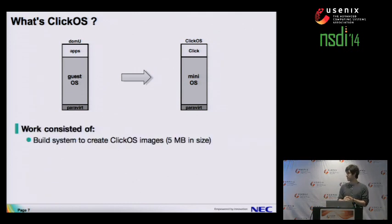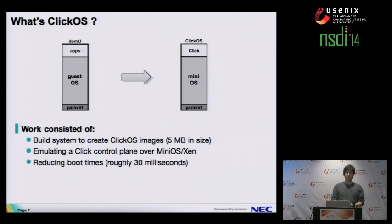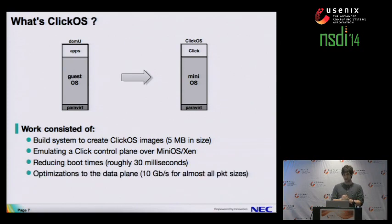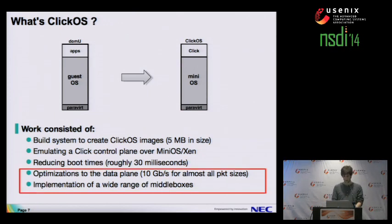The work consisted of building a build system to boot these ClickOS VMs — we actually extended it toward building other things beyond ClickOS. We had to emulate the Click control plane over Xen, since we don't have a filesystem, so we used Xen services to provide the same functionality. We reduced boot time from something like one second down to 30 milliseconds — interestingly, uncompressing the image takes longer than booting the VM. We did further optimization to the data plane to achieve 10 gigabit line rates for almost all packet sizes. I will focus mostly on the last two items, which I think are the major contributions of this paper.